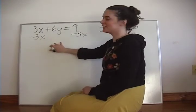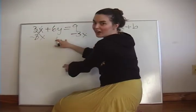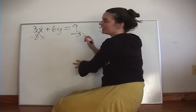3x minus 3x cancels out, we get 6y equals negative 3x plus 9.